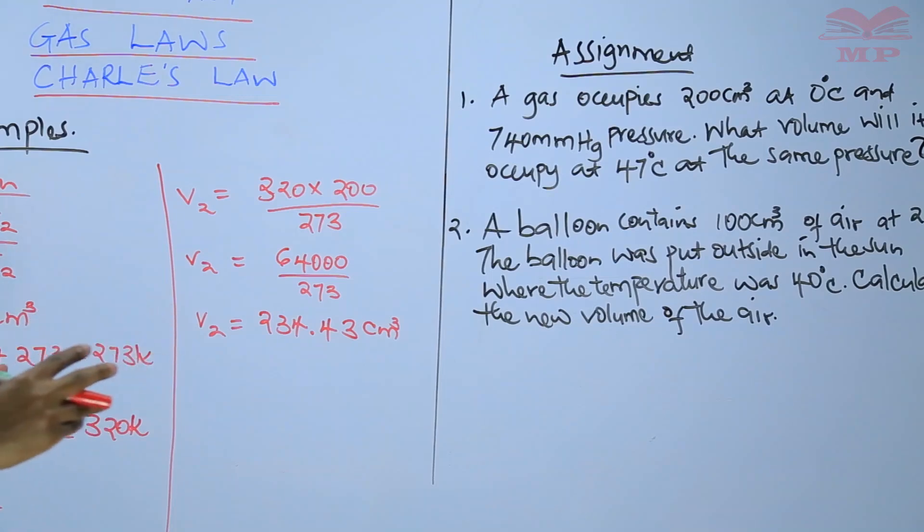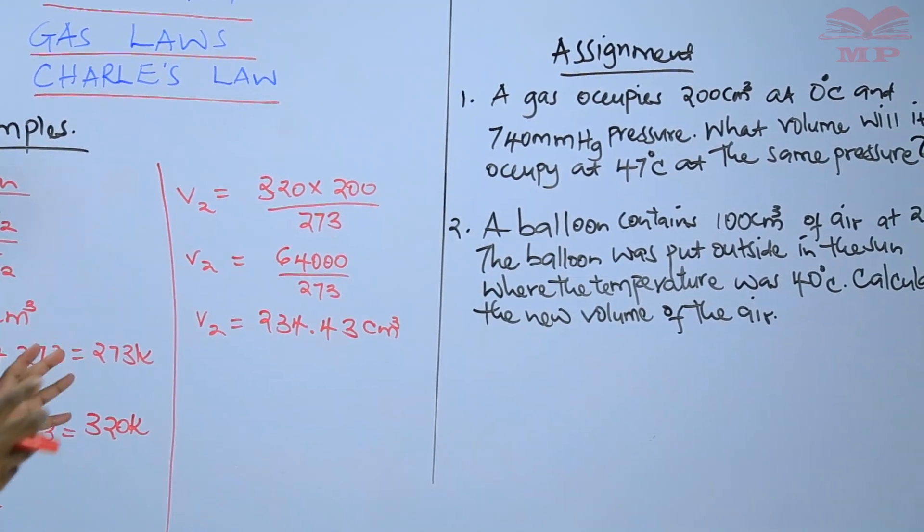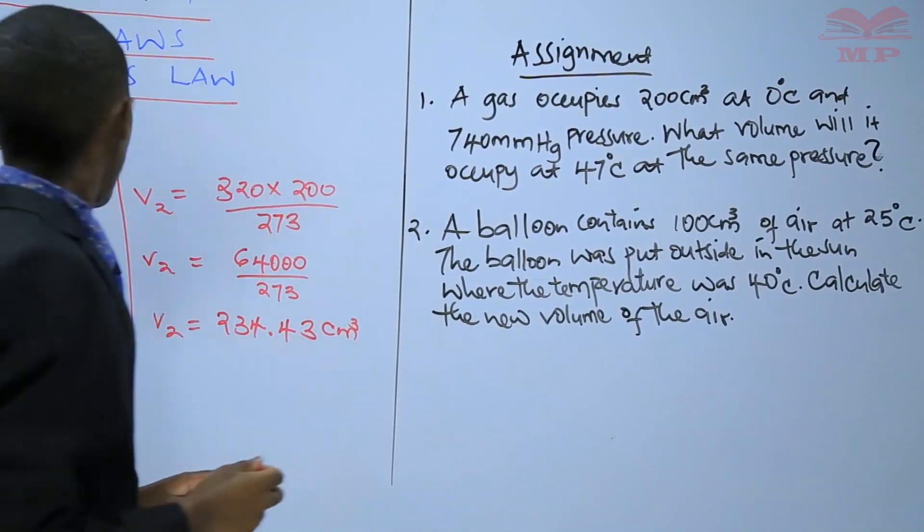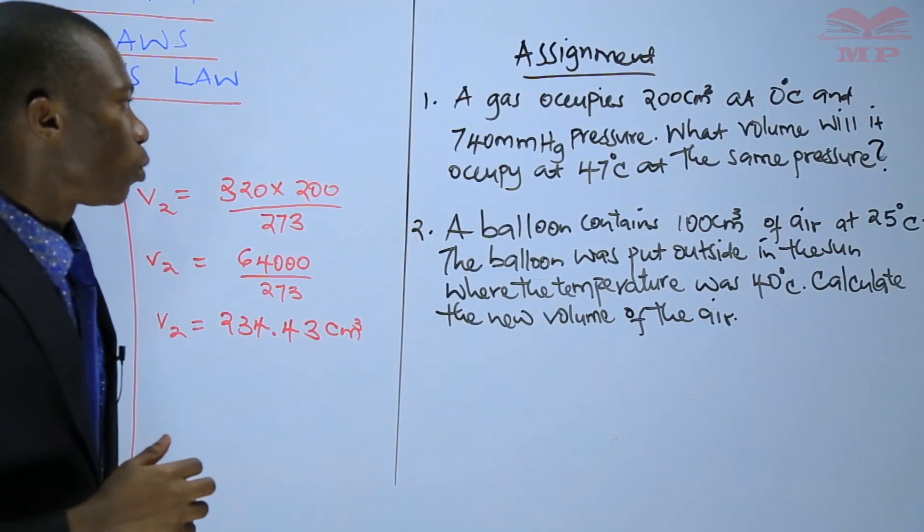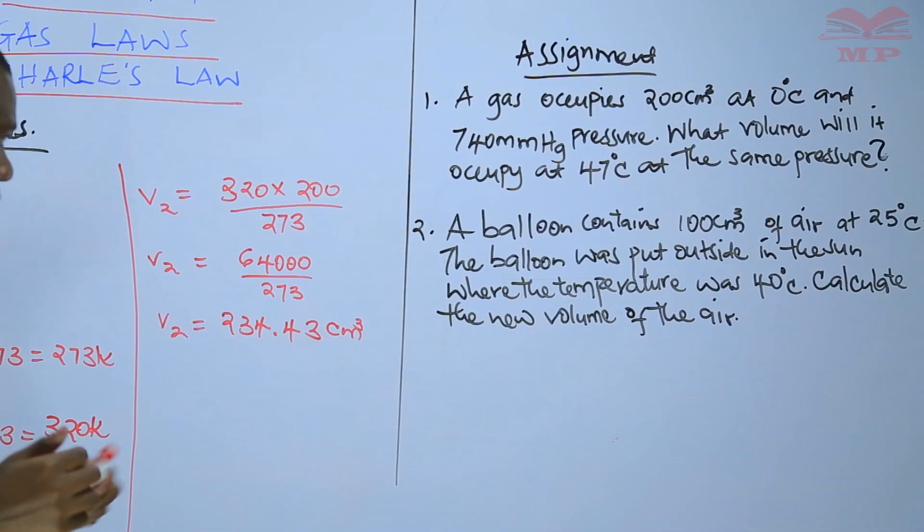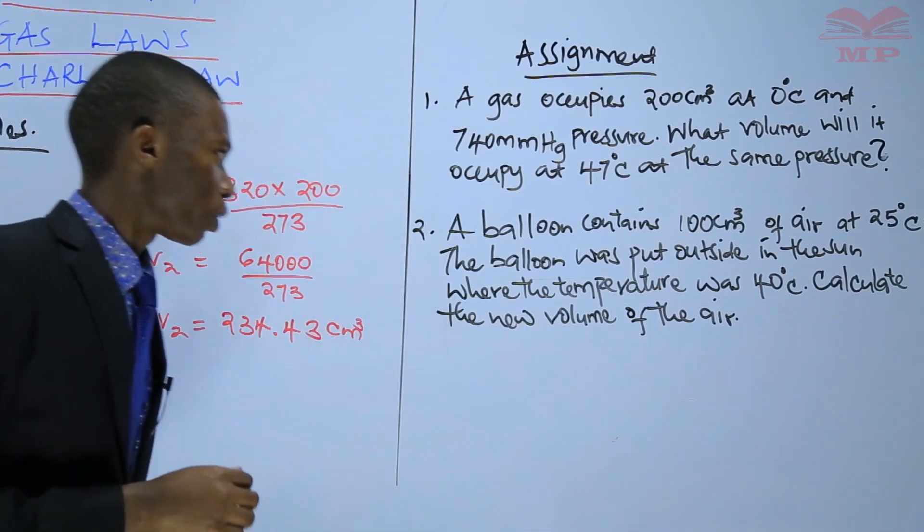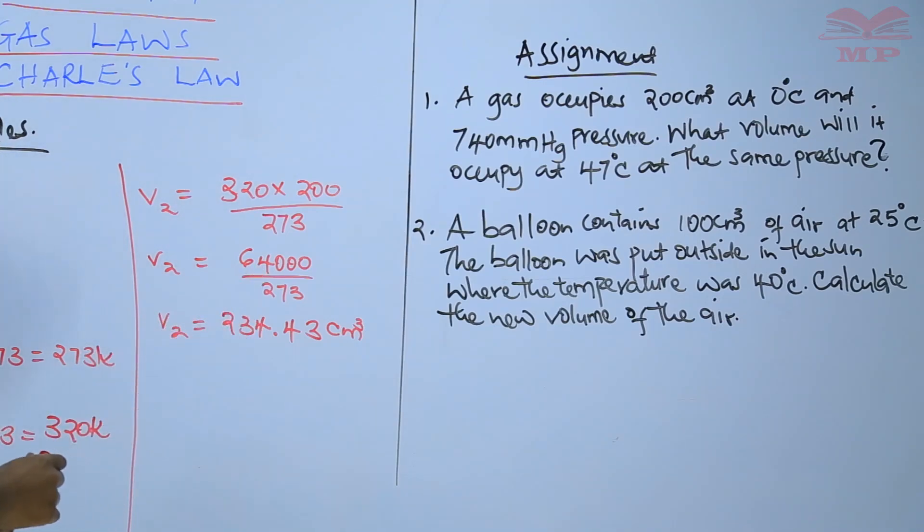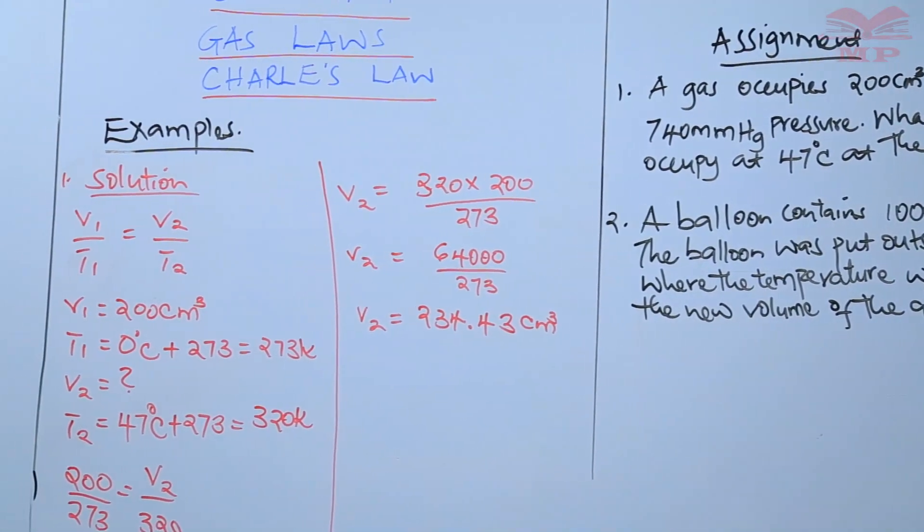In the second question, it is a balloon contains 100 centimeters cubed of air at 25 degrees Celsius. The balloon was put outside in the sun where the temperature was 40 degrees Celsius. Then calculate the new volume of the air. This was our number one, therefore, number two.